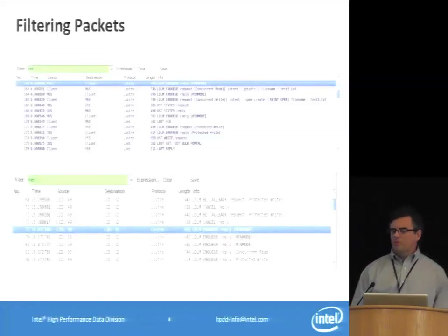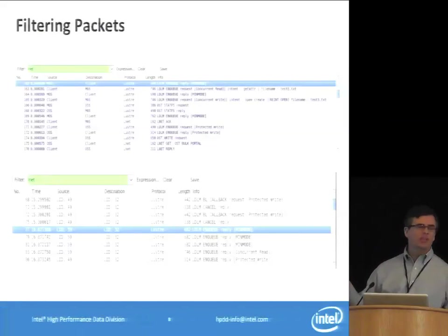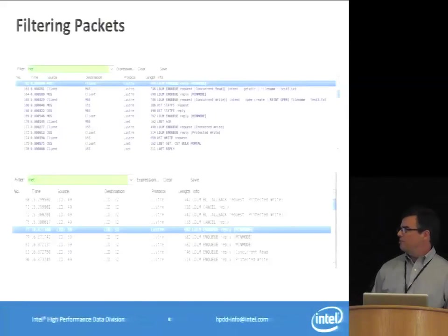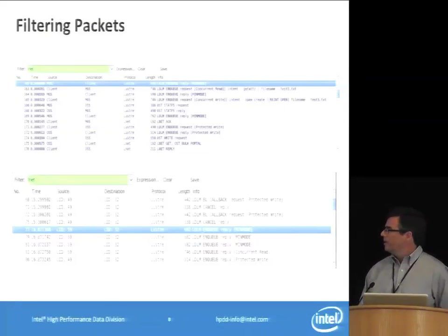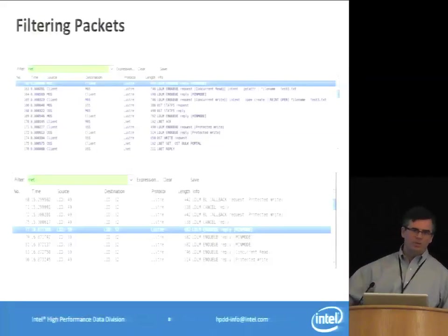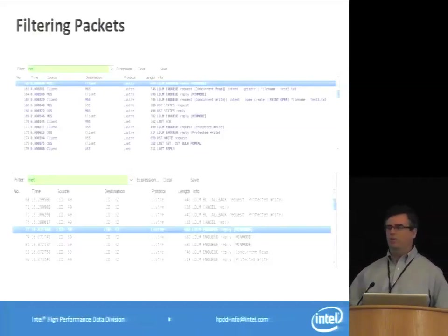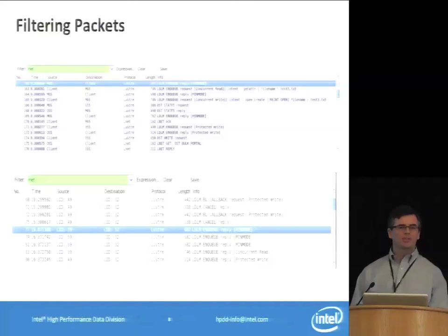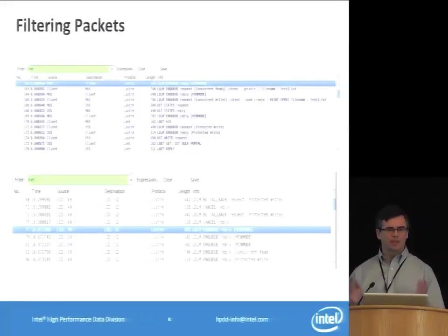For filtering packets, the most basic way is to go to the filter field and type in a protocol name like TCP, IP, LNET, or Lustre and hit return — the display list updates to show all packets containing that protocol. For more advanced filtering, you can type protocol.fieldname followed by an expression like equal to, greater than, or less than a value, and combine them with AND and OR using C-like syntax. The filter field turns red while typing until Wireshark understands the input, then turns green — indicating whether you have spelling mistakes.